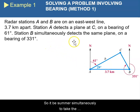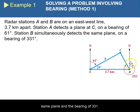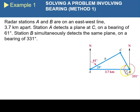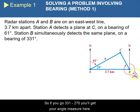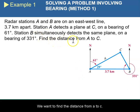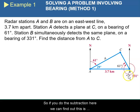So if B simultaneously detects the same plane at a bearing of 331 degrees, you create a clockwise angle of 331 degrees, which will give you the measure. At about this point, since this is a 90-degree measure, this is 270 degrees. So if you go 331 minus 270, you will get your angle measure here. Doing that subtraction, we can find that this is also a 61-degree angle measure.